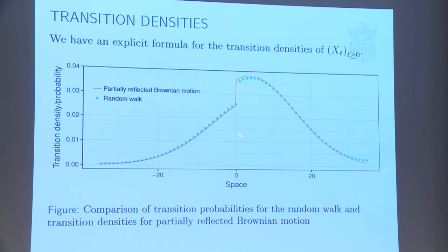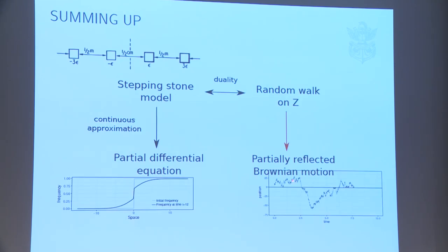This is an illustration of this result. The blue dots are the transition probabilities of the original random walk, just computed by iterating the transition matrix. The red line is the transition density of the partially reflected Brownian motion, the limiting process. We happen to have an explicit formula for this, so it's easy to draw. You can see that the law of XT is very close to the law of XT.